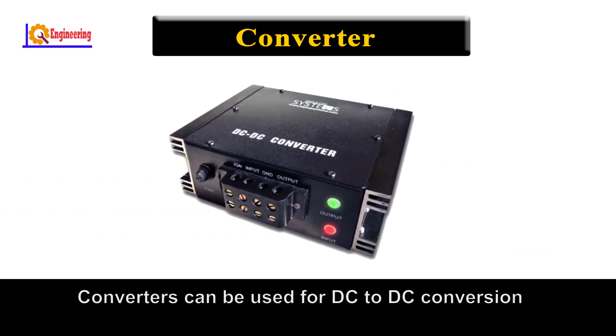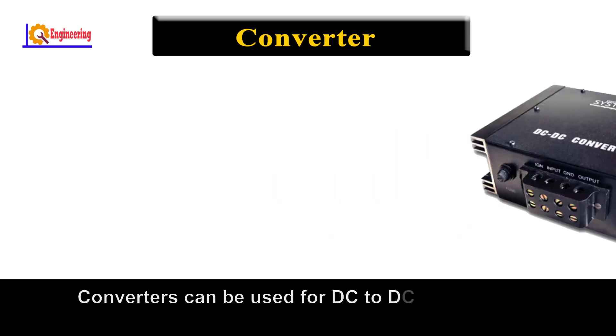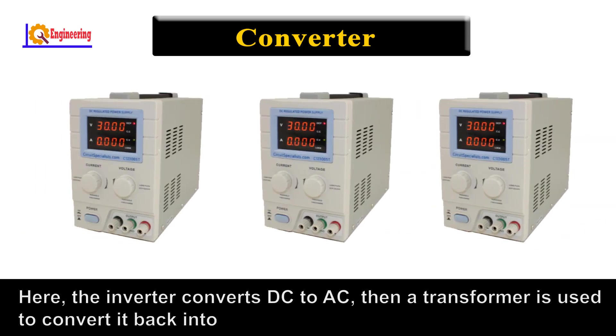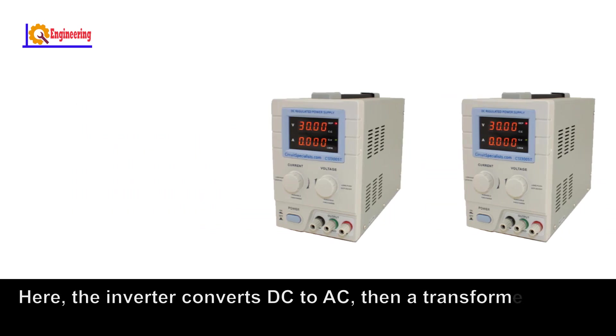Converters can be used for DC to DC conversion. Here, the inverter converts DC to AC, then a transformer is used to convert it back into DC.